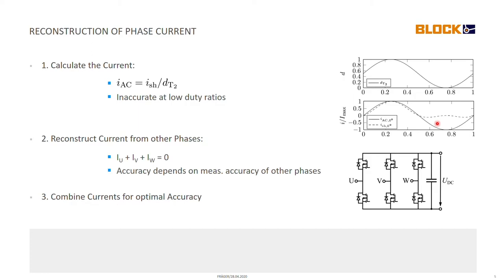So what do we do? We just say when this duty ratio here is really low, we just take the current from the other two phases we need, we use negative sum of the other two phases and we are done. And then we just have to do some accuracy analysis because we always have to know which current to use.